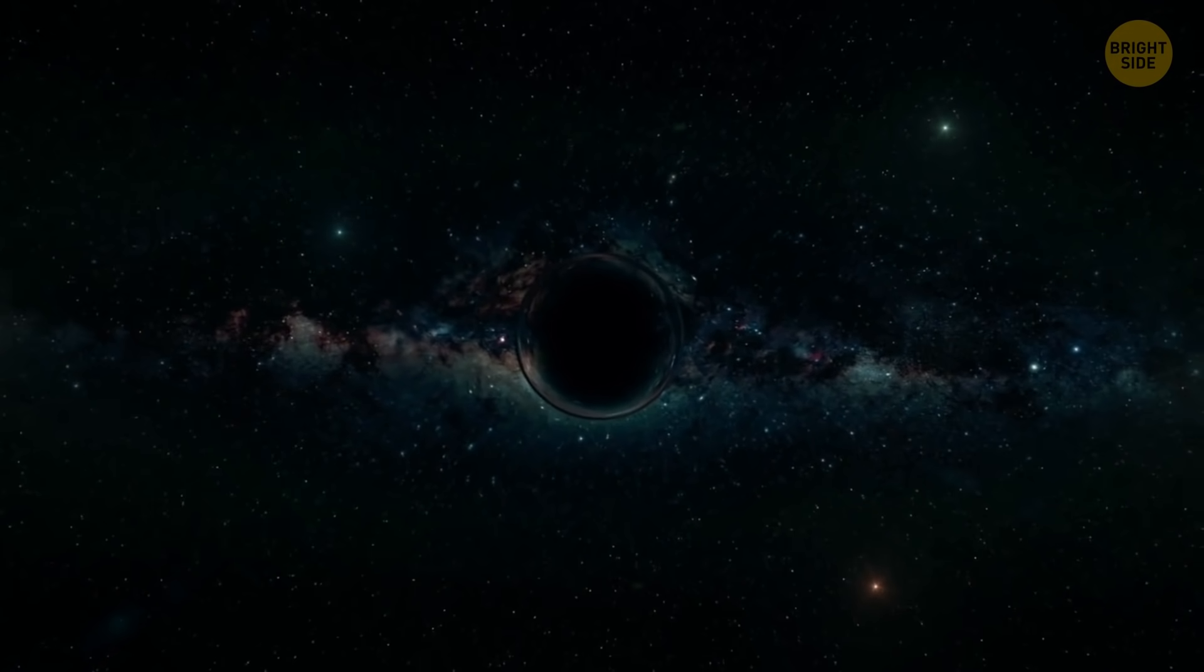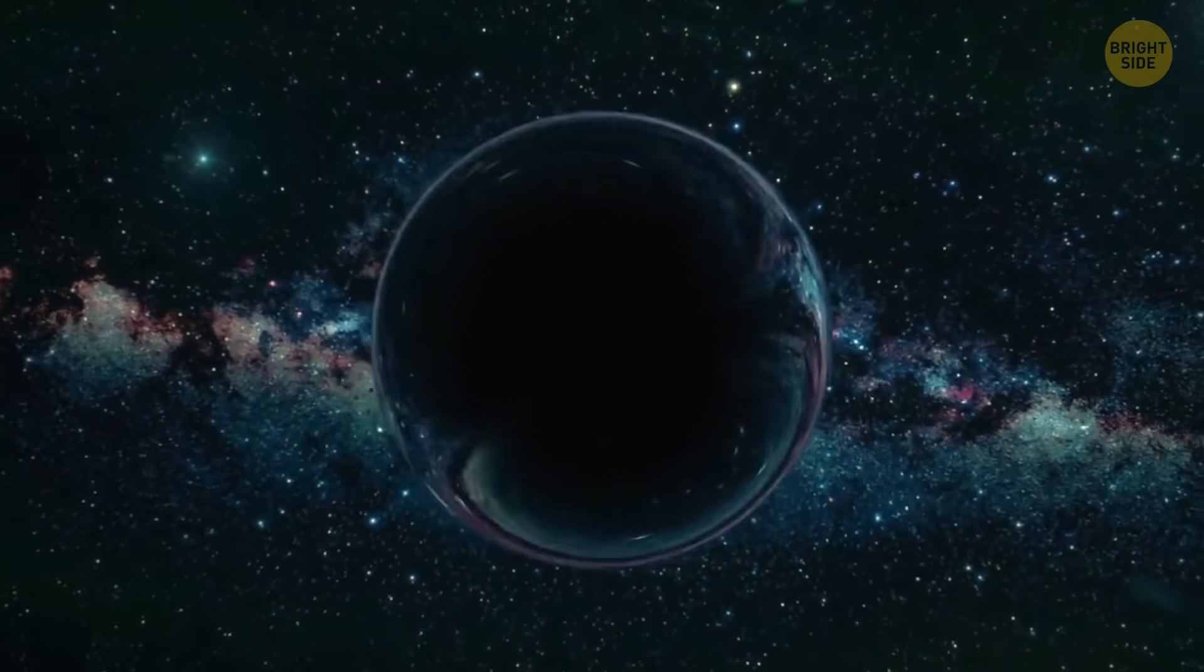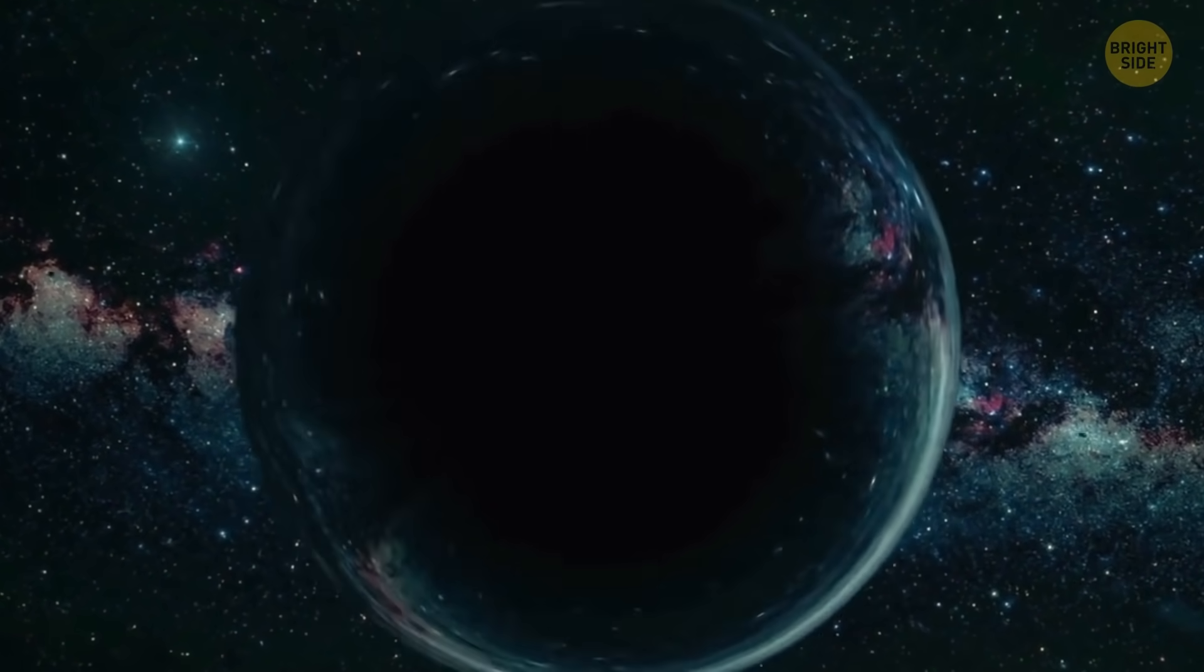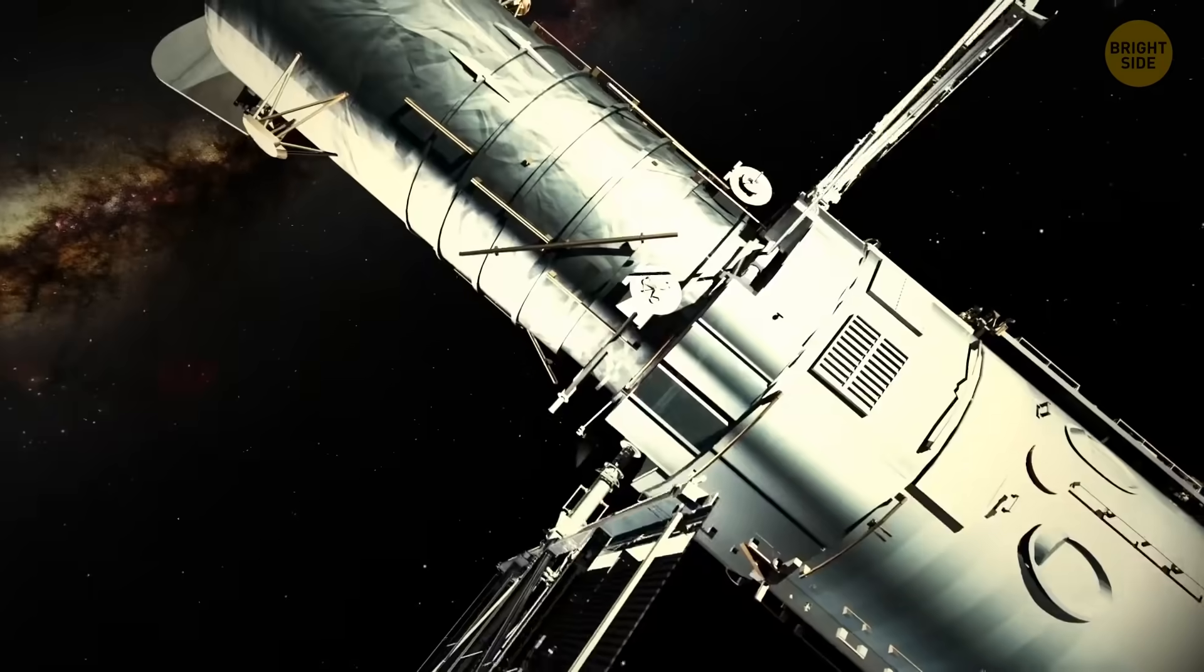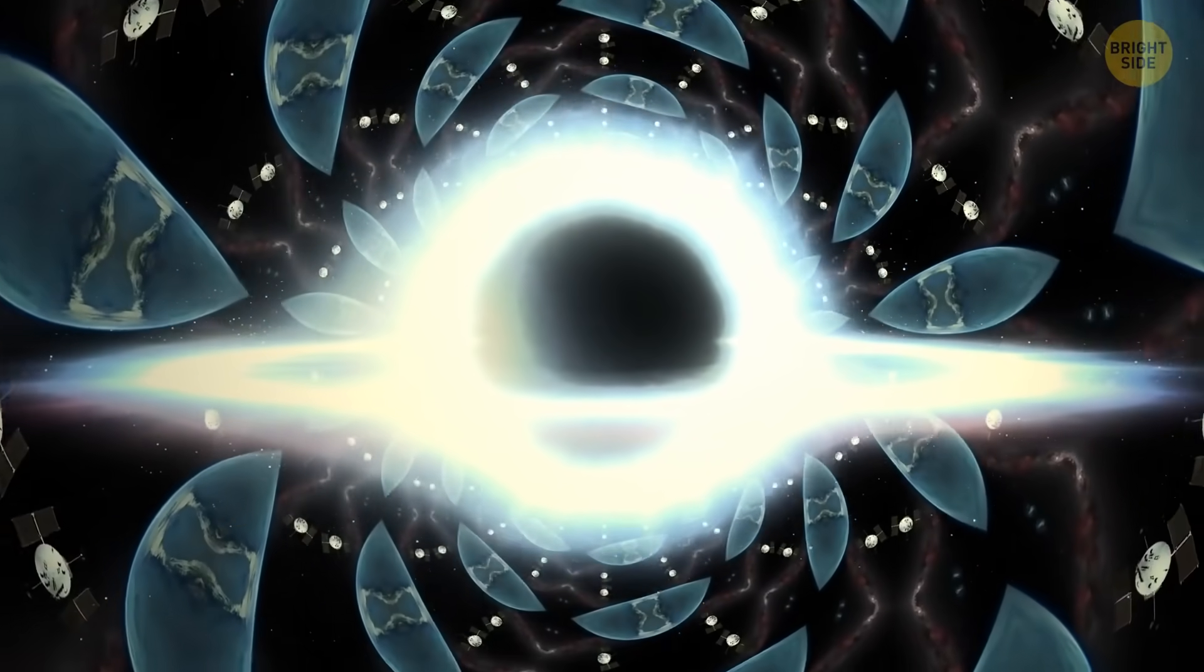Now in space, inky darkness between blinding points of light does a great job. It hides black holes, gaping, hungry, and scaring. Their blackness makes it really difficult for astronomers to find detailed information about these space monsters.